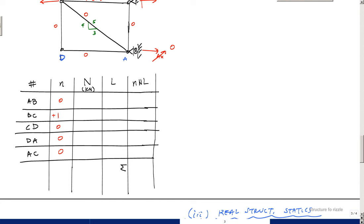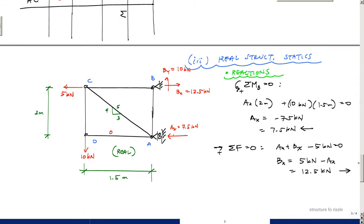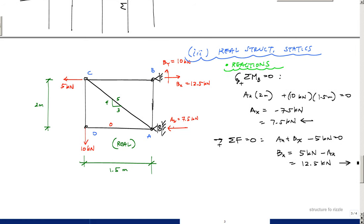In another problem we might have members with different materials or different areas, but here EA is constant. Now let's draw the real structure with real loading and calculate the internal forces. Using basic statics on the real structure, we get Ax = 7.5 kN to the left, Bx = 12.5 kN to the right, and By = 10 kN upward.